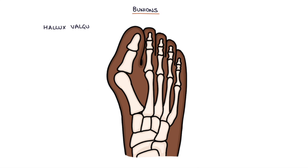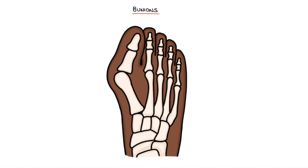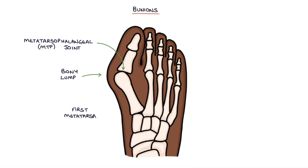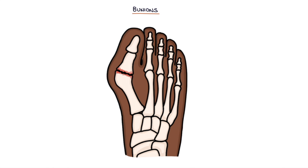Next, let's talk about bunions. The medical name for bunions is hallux valgus. Hallux refers to the big toe and valgus refers to the angle of the deformity. A bunion is a bony lump created by a deformity at the metatarsophalangeal joint — or MTP joint — at the base of the big toe. The first metatarsal becomes angled medially towards the inside of the foot, the big toe becomes angled laterally towards the other toes, and the MTP joint becomes inflamed and enlarged. Over time, additional stress on the joint can result in osteoarthritis.